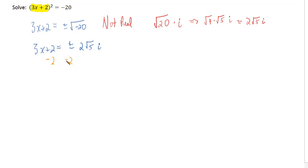This negative 2 now on the right is not a like term with the 2 root 5 i. So we have 3x equals negative 2 plus or minus 2 root 5 i. And then we'll divide by 3 on both sides of the equation. And we have to divide each term by 3 on the right hand side.